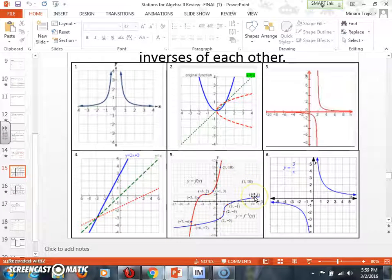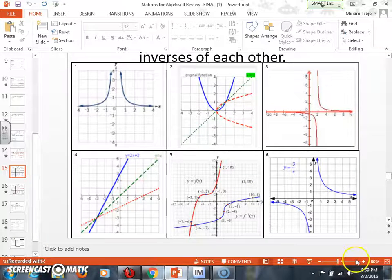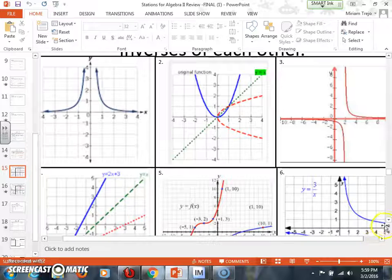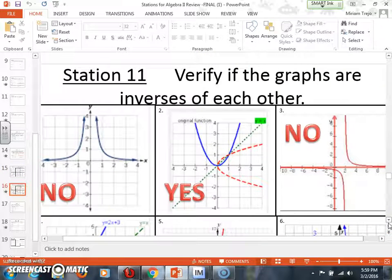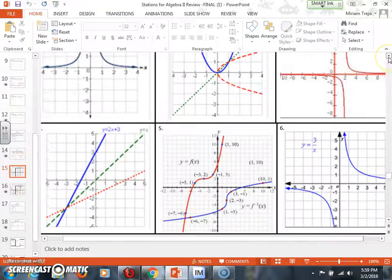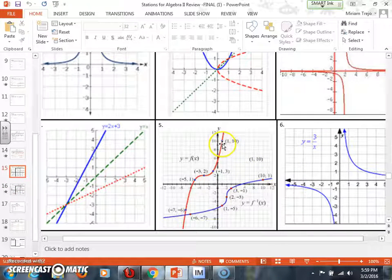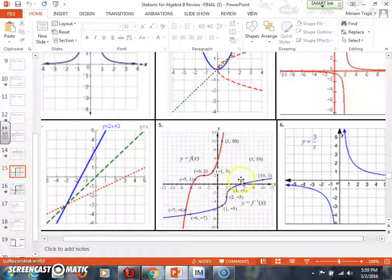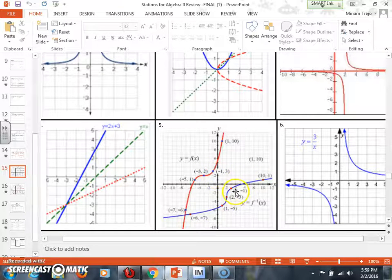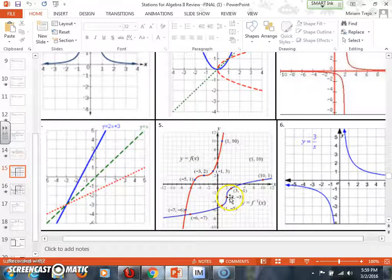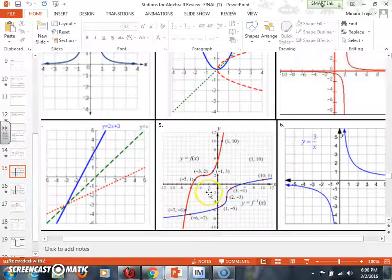Look at example five. Example five is probably the best example because you can see the ordered pairs pretty well. So if you look here, 1, 10 should be 10, 1. Negative 1, 3 should be 3, negative 1. Negative 3, 2, when you flip it over, should be 2, negative 3. Negative 5, 1 should be 1, negative 5. And negative 7, 6 should be negative 6, negative 7. These graphs are inverses of each other.